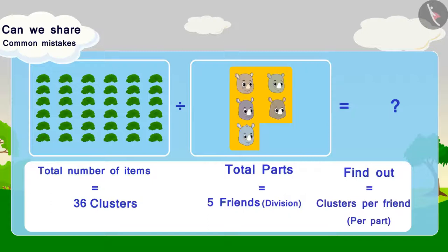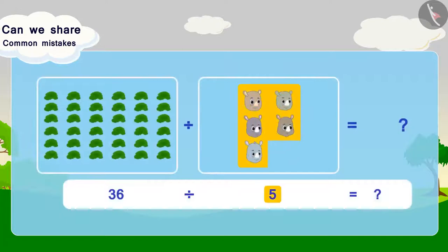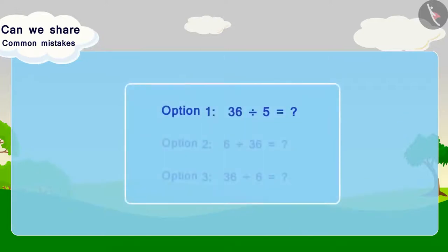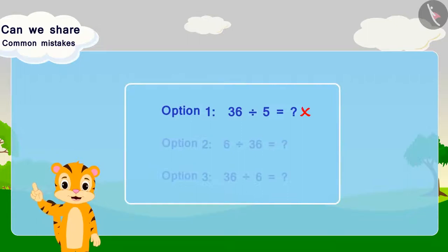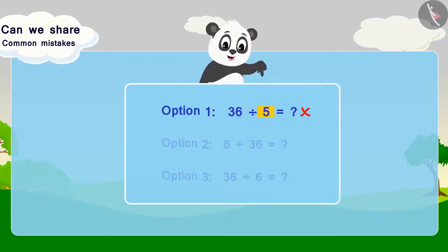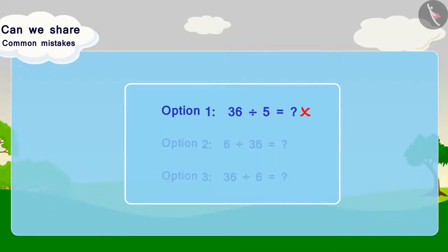But what will poor Gaggoo eat? In this option, we have not included Gaggoo while calculating the total parts. The total number of parts is wrong. For this reason, this option is incorrect. This is a very common mistake — always count the total number of parts correctly.